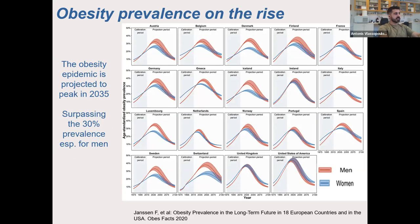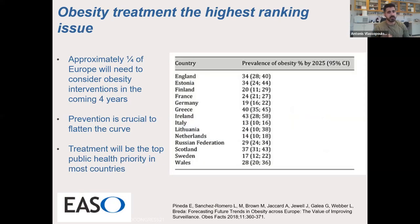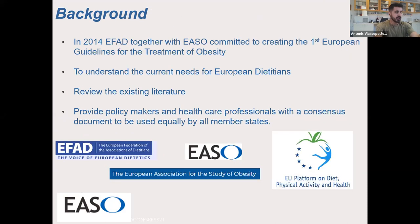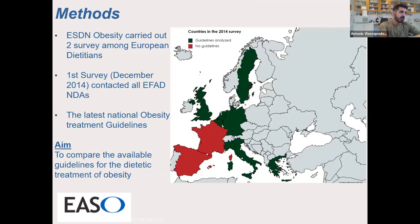Although prevention is crucial, treatment will be a top public health priority in most countries. As Ellen already mentioned, this whole work started in 2014, where EFAD alongside EASO committed to creating the first European guidelines for treatment of obesity. It has been a long road, because we needed to first understand the needs of European dietitians, review the existing literature, and then end up with a consensus document for policymakers and healthcare professionals. I will start with the first study — a survey conducted in December 2014 among European dietitians, asking them to provide the latest national obesity treatment guidelines.